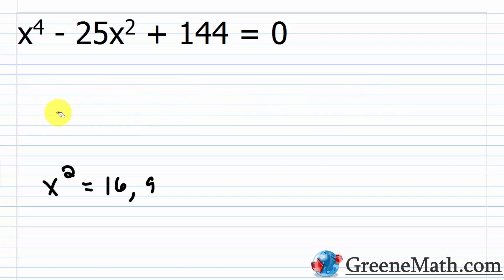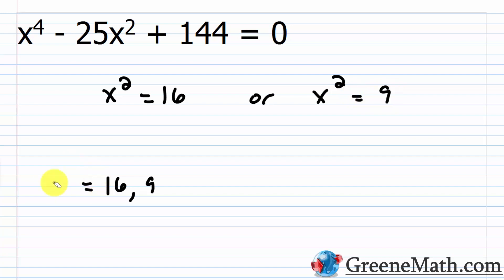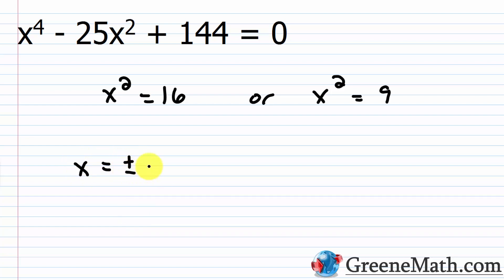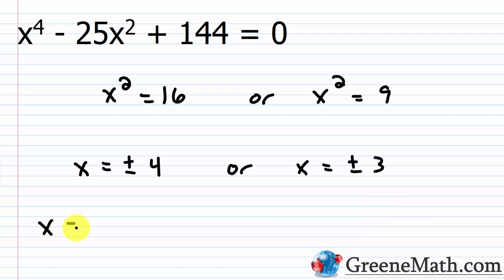Using the square root property, if x squared equals 16, then x equals plus or minus 4. If x squared equals 9, then x equals plus or minus 3. So we have four solutions: x equals plus or minus 4, and x equals plus or minus 3.